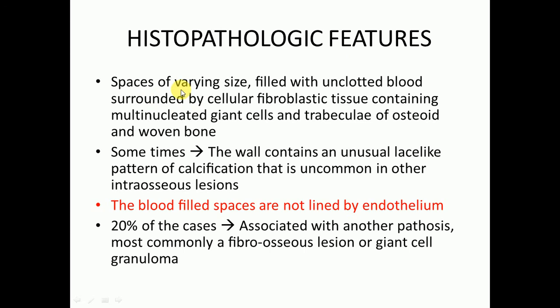Histopathological features include spaces of varying size filled with unclotted blood, surrounded by cellular fibroblastic tissue containing multi-nucleated giant cells and trabeculi of osteoid and woven bone. Sometimes the wall contains an unusual lace-like pattern of calcification that is uncommon in other intraosseous lesions. The blood-filled spaces are not lined by endothelium, which is a characteristic histopathological feature.